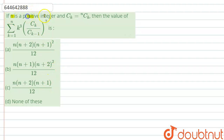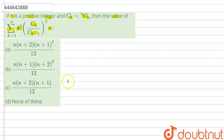The question says that if n is a positive integer and Ck = nCk, then find the value of summation k=1 to n of k³·(Ck/Ck-1)². Option A: n(n+2)(n+1)²/12. Option B: n(n+1)(n+2)²/12. Option C: n(n+2)(n+1)/12. Option D: none of these. We have been given that Ck = nCk and need to find the value of the given expression.